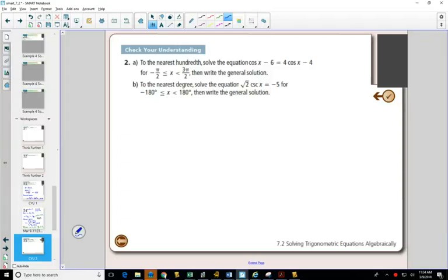Example 2 is a calculator question because I've got cos x minus 6 equals 4 cos x minus 4. I'm going to get all of my values on the same side, so I'm going to subtract 4 cos x on both sides. I'm going to add 6 to both sides.